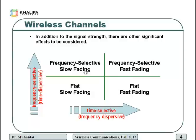How do we know if the channel is frequency selective or not? If the symbol period is greater than or equal to ten times the delay spread, the channel is not frequency selective. If it is less than ten times the delay spread, then the channel is frequency selective.